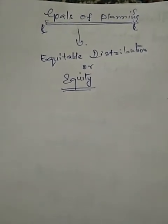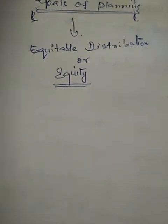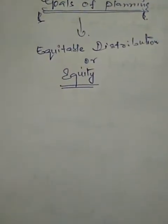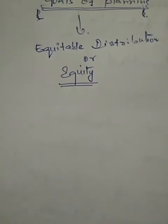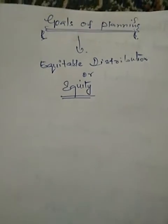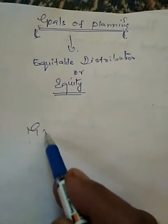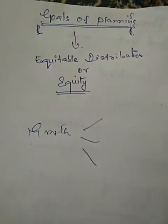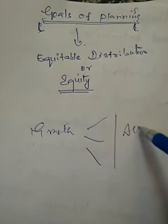Benefits of growth must be spread across larger sections of society so that the distribution of income becomes equitable - growth is equitably distributed across all sections of society.